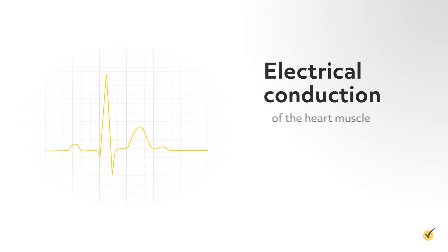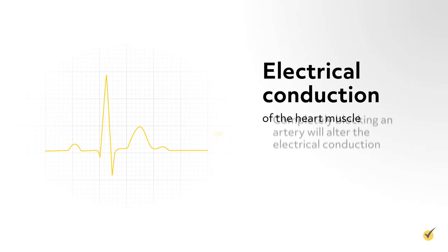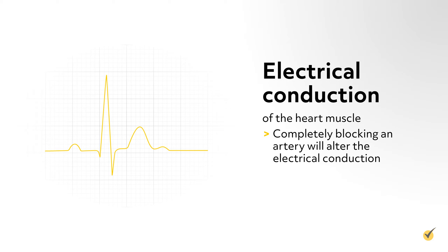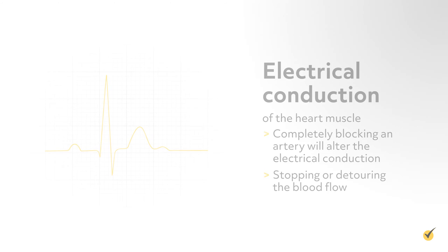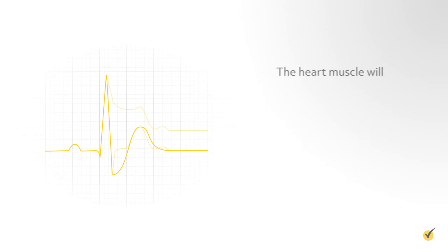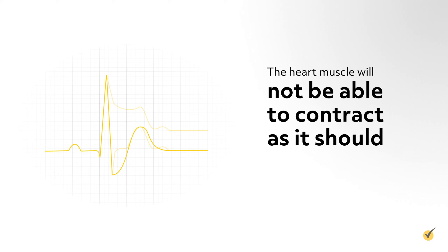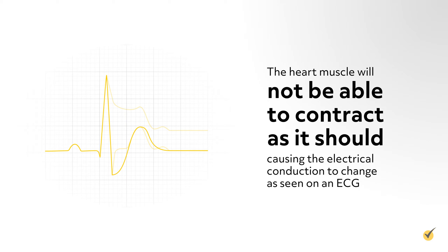If you think about the electrical conduction of the heart muscle, completely blocking an artery will alter the electrical conduction by stopping or detouring the blood flow. The heart muscle will not be able to contract as it should, causing the electrical conduction to change as seen on an ECG.